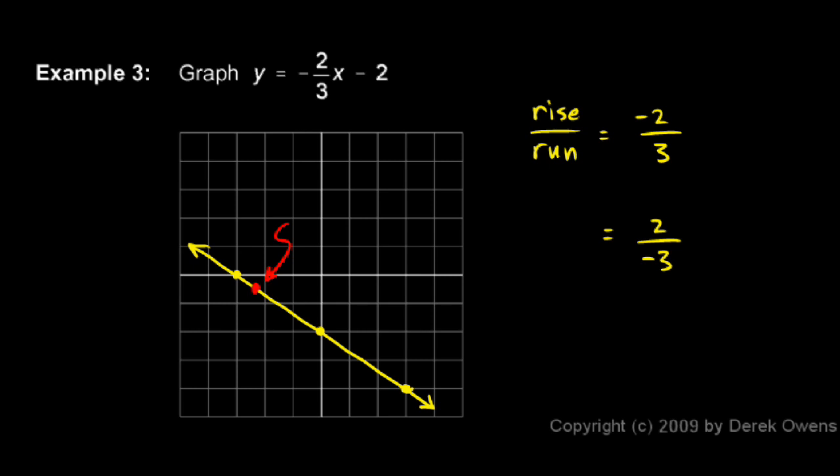And all the points on this line satisfy this equation. And any point not on the line doesn't satisfy the equation. That's what it means for this equation to be the equation of this line. Every single point on that line is a solution to the equation.